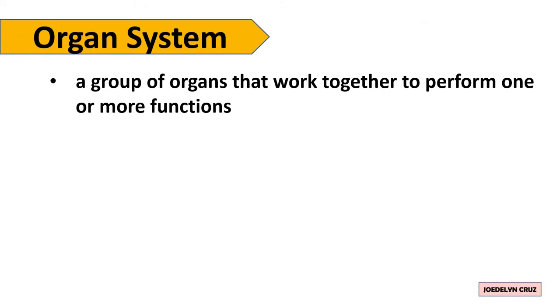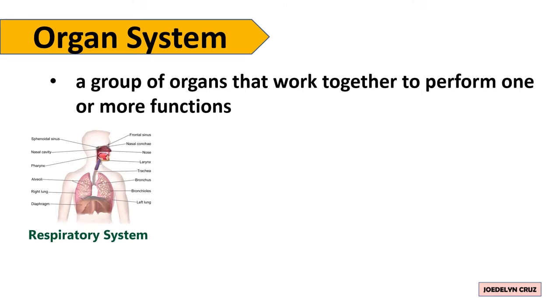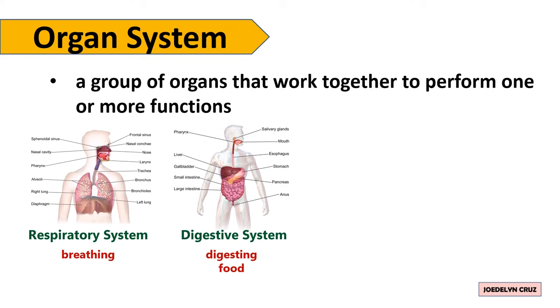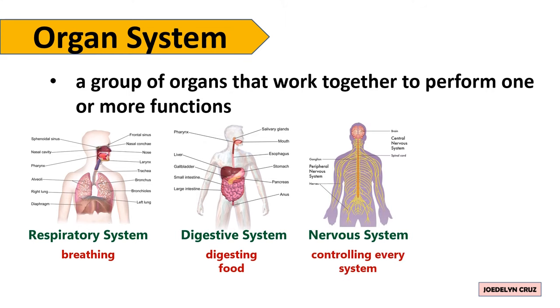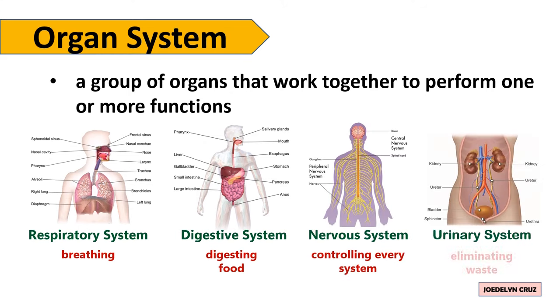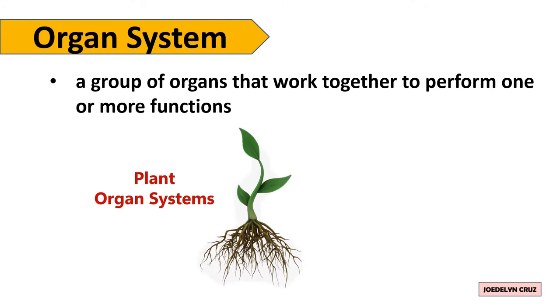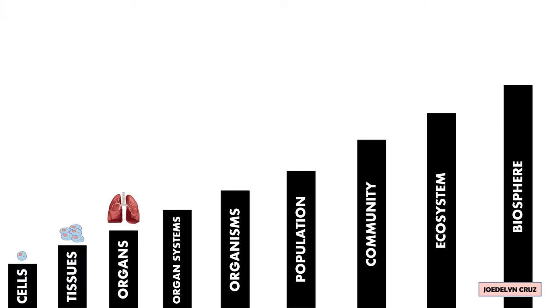Organ system is a group of organs that work together to perform one or more functions. The examples are Respiratory system for breathing, Digestive system for digesting food, Nervous system for controlling every system, and urinary system for eliminating waste. The higher level than organs are Organ systems.